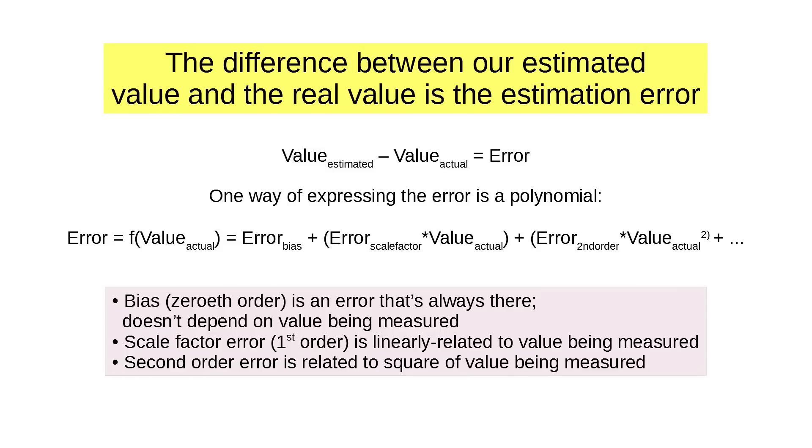The bias or zeroth order, it says zeroth because it's the value to the zeroth power, which is just one. It's an error that's always there, like that stupid minus one amp measure on the power supply. The error doesn't depend on the value being measured. In fact, the power supply is off. The scale factor error is linearly related to the value being measured. So as the value goes up, the error goes up. A second order error is related to the square of the value being measured. Let's just take a look at some pictures. It's a lot easier.